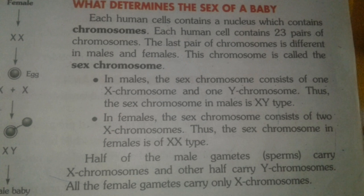We only need to focus on the sex chromosome, which is XX for girls and XY for boys. This last pair is known as the sex chromosome. The other 22 pairs are called autosomes. In males, the sex chromosome consists of one X and one Y chromosome — so the sex chromosome in males is XY type.